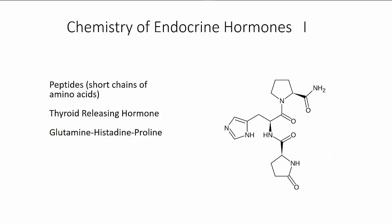Hormones can have the shape of peptides. They can be short chains of amino acids. Here we see thyroid releasing hormone, a very small molecule with only three amino acids.